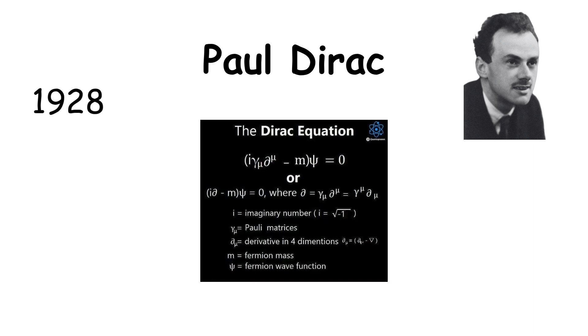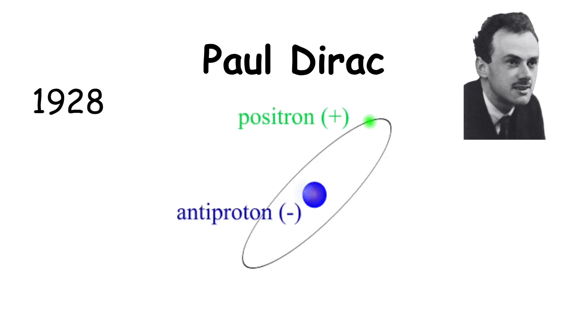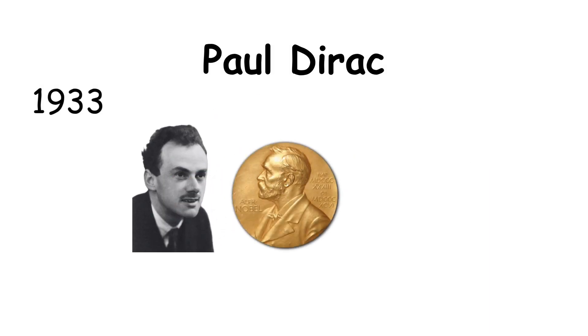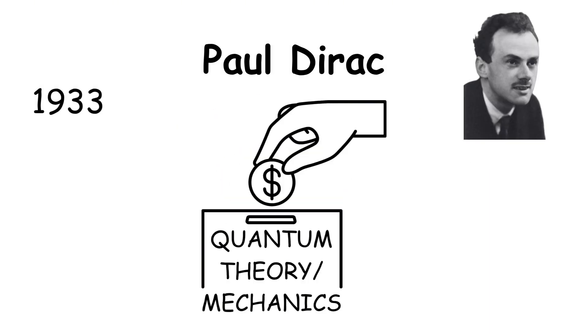His equation didn't just work. It predicted antimatter, a completely new form of matter, later confirmed by experiments. In 1933, he shared the Nobel Prize in physics with Schrödinger for their contributions to quantum mechanics.